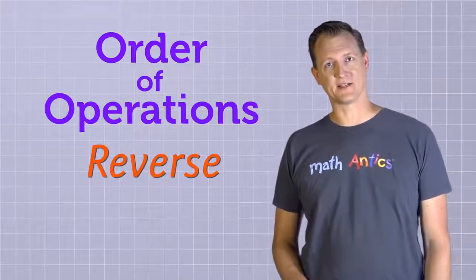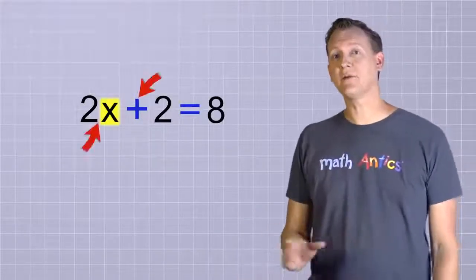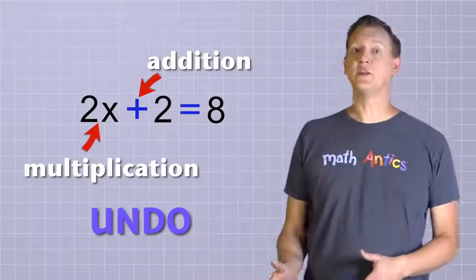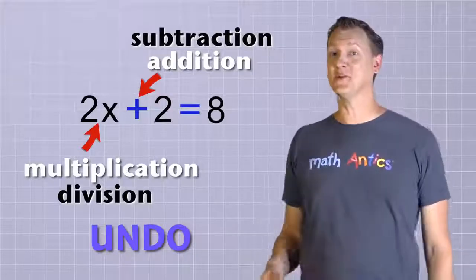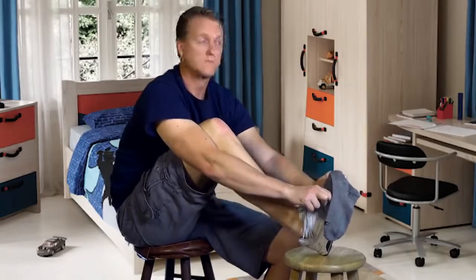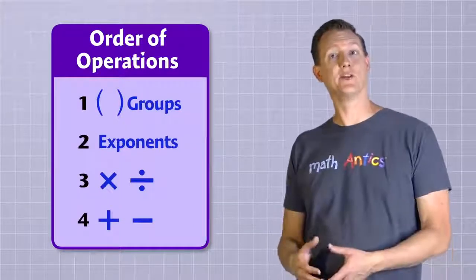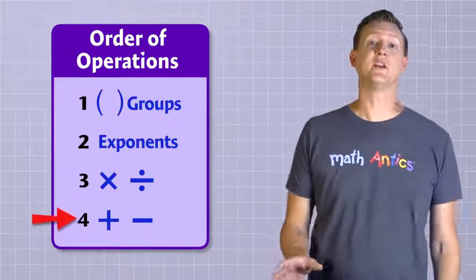But it can be a little tricky actually putting it into practice. So to see how it works, let's start by solving a very simple two-step equation. Fortunately, in math, we have a special set of rules that tell us what order to do operations in. Those rules tell us to do operations inside parentheses first, and then we do exponents, and then we do multiplication and division, and last of all, we do addition and subtraction. Those are the rules you need to follow when simplifying mathematical expressions or equations.